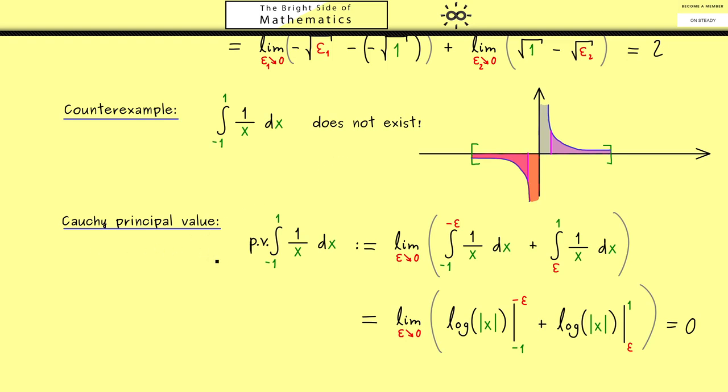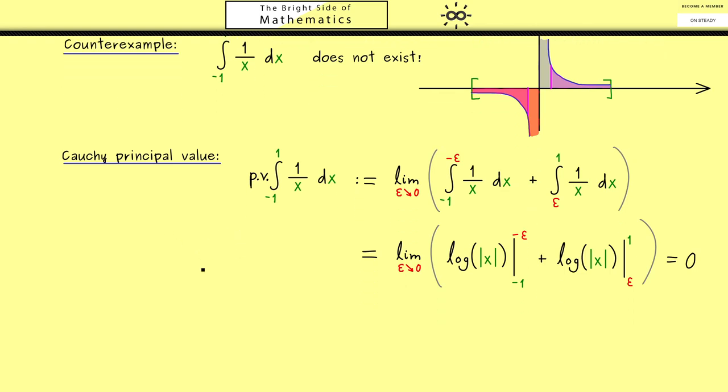But the Cauchy principal value does exist. And indeed, there are some applications where the Cauchy principal value is sufficient. Therefore you should also remember here, if the improper Riemann integral exists, then the Cauchy principal value will exist as well.